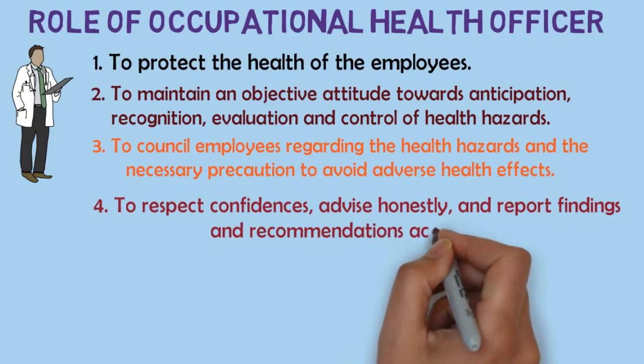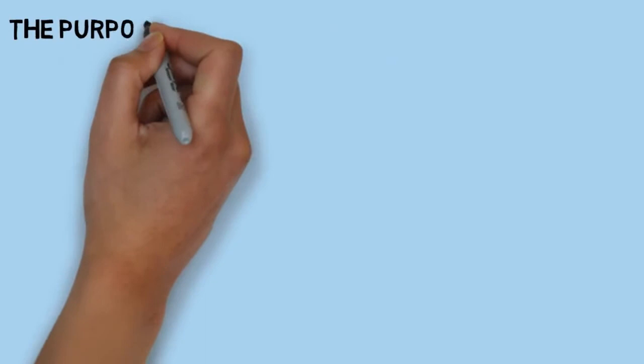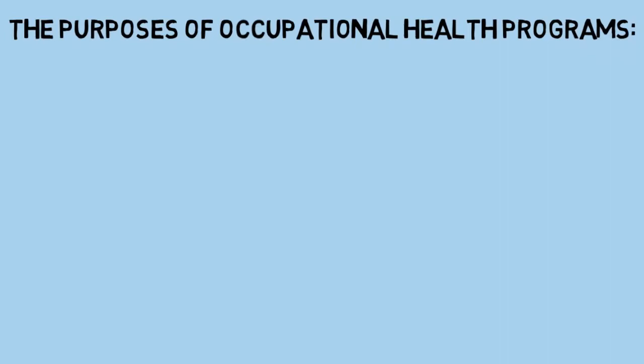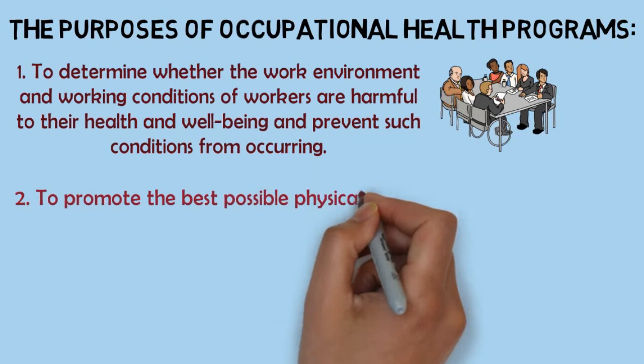Further responsibilities include: to act responsibly in the application of industrial hygiene principles towards the attainment of a healthy, full working environment. The purposes of occupational health programs are divided into three: firstly, to determine whether the work environment and working conditions of workers are harmful to their health and well-being and to prevent such conditions from occurring; and secondly, to promote the best possible physical, mental and social health of people at work.